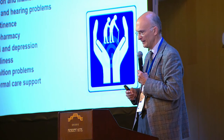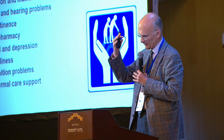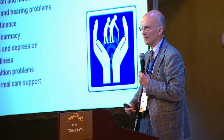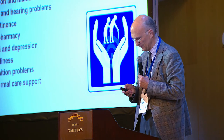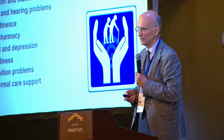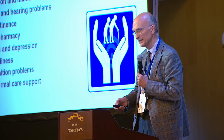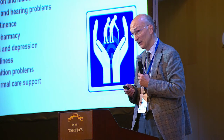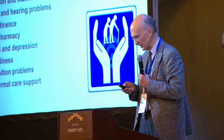So once we have a picture — reminding you of the three-step plan: screening, where necessary assessment in depth, and third a tailored plan — you can see there are different aspects to address: functional loss, mobility and falls, nutrition, incontinence, polypharmacy, mood and depression, loneliness, cognitive problems, and also lack of informal care support.